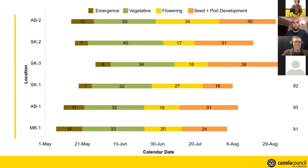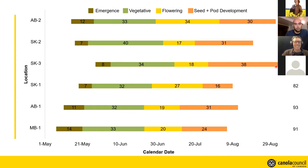Looking at the whole big picture, here's the timeline of what happened across the fields we observed — planting, emergence, bolting, start of flowering, end of flowering, and then reproductive development. This gives you a snapshot: this field was planted later and it matured later — that makes sense. But this field here wasn't the first one planted and wasn't the last, yet it was actually the second-last to mature. When you start recording these things, you can look back and examine the environmental conditions during that time.